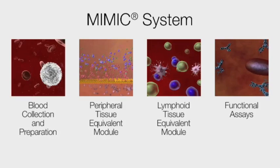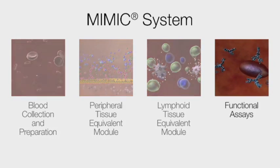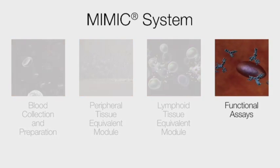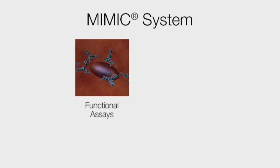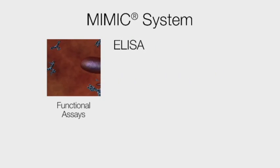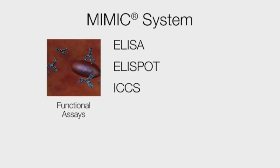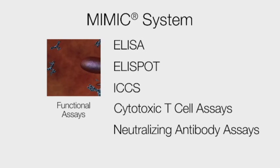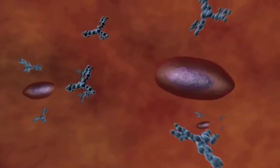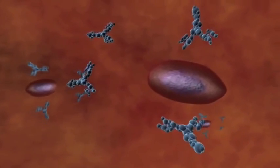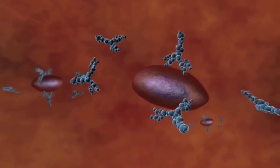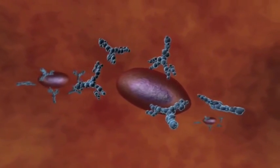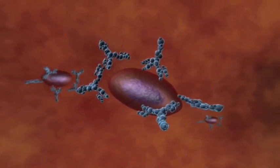The final step in the MIMIC System is the characterization of these immunocytes and biomolecules using a wide range of assays, such as ELISA, ELISPOT, ICCS, cytotoxic T cell assays, and neutralizing antibody assays. Shown here, the vaccine-generated antibodies neutralize the pathogen, stopping it from entering into the cellular host.